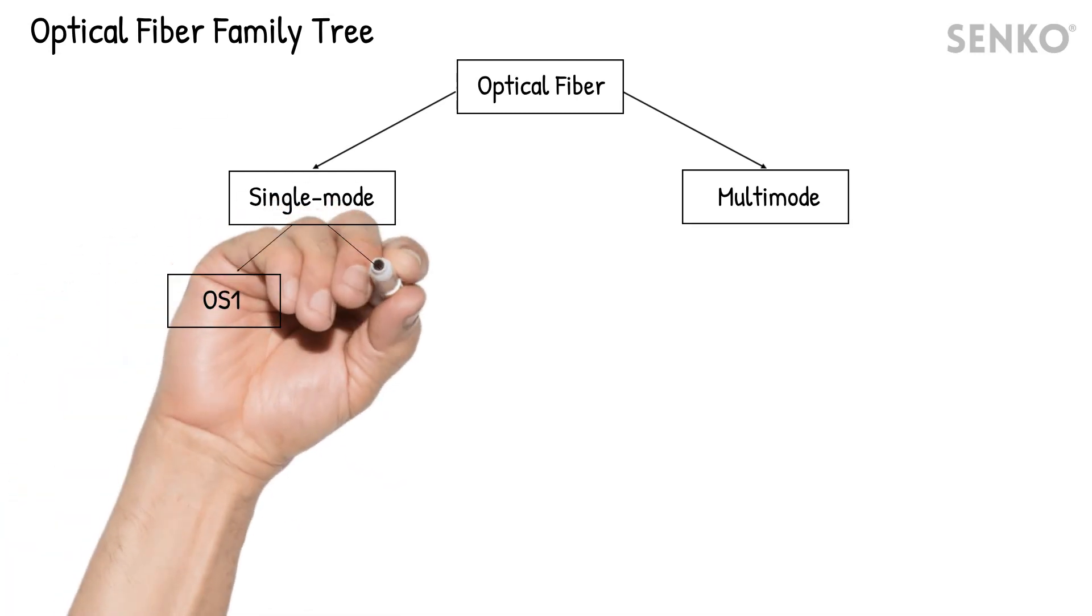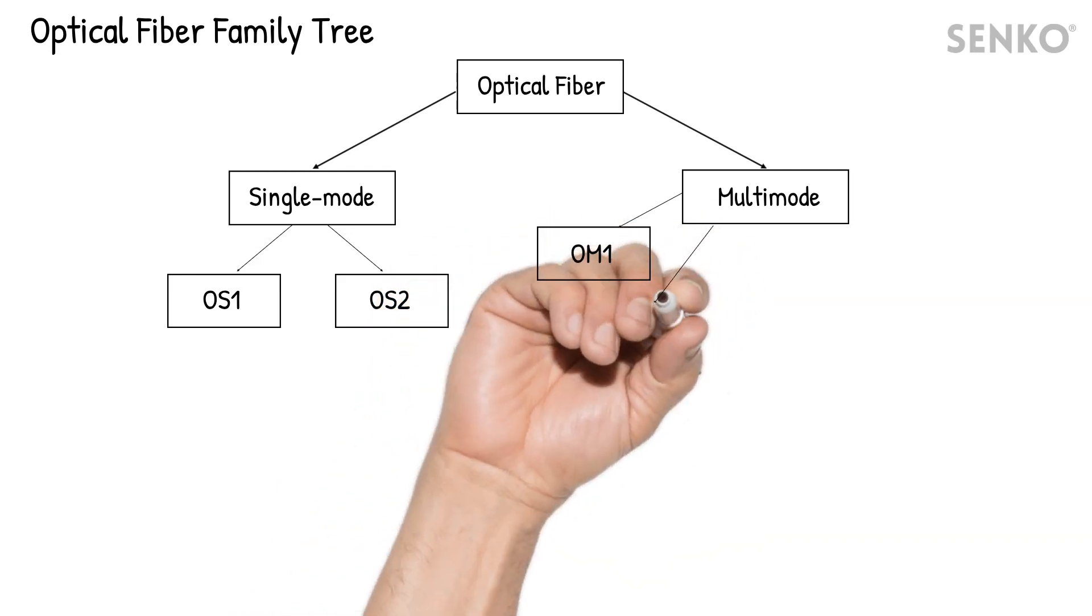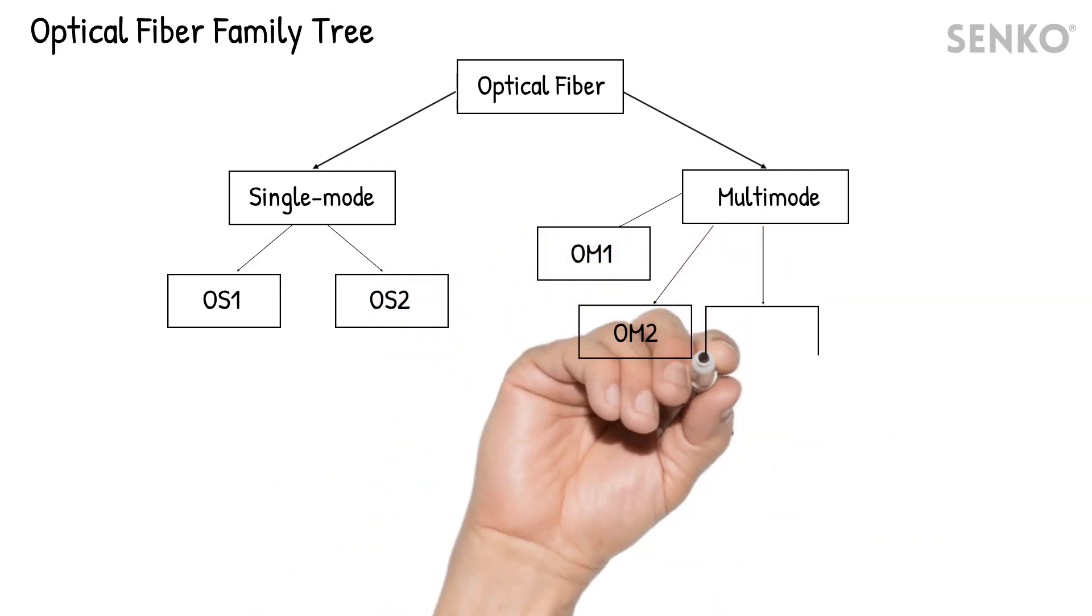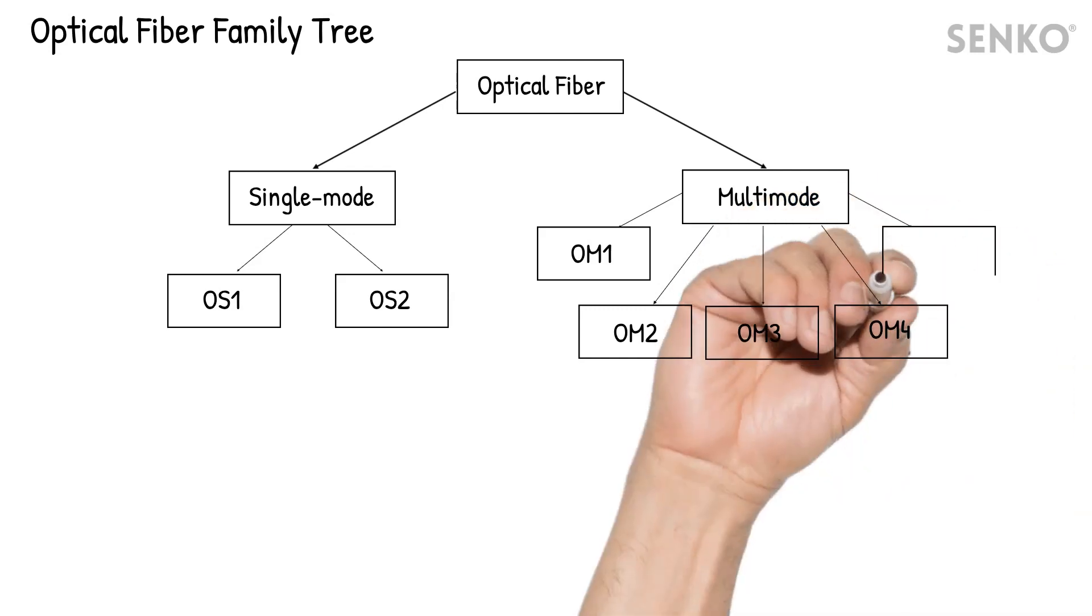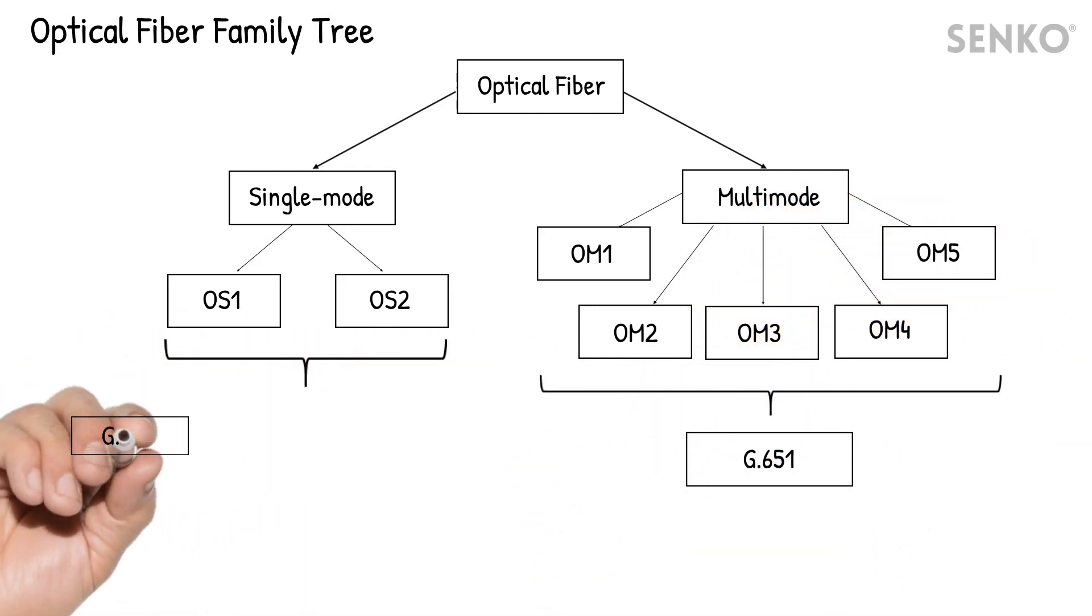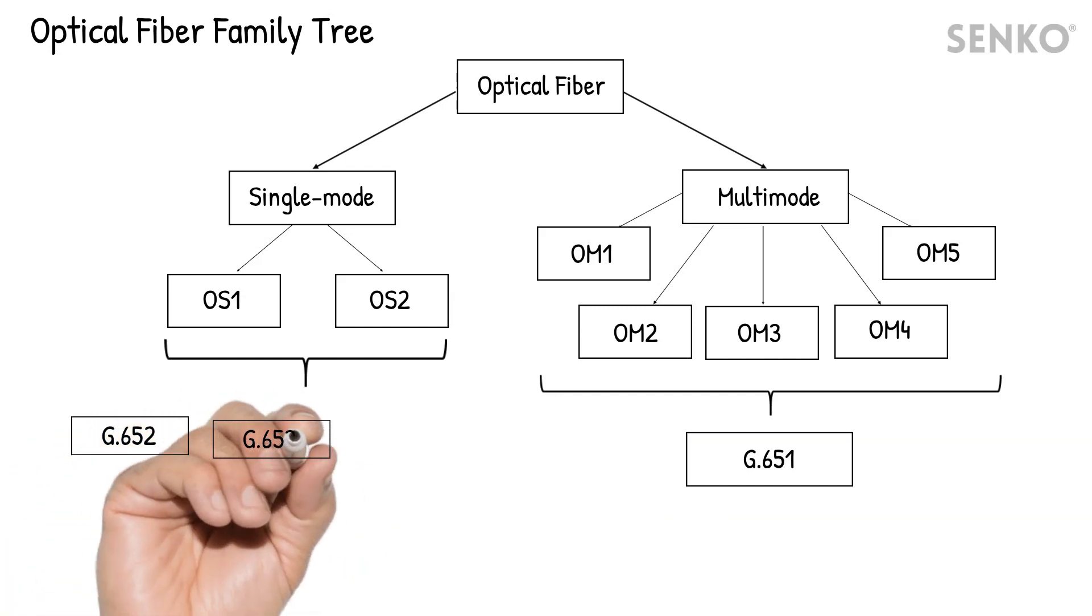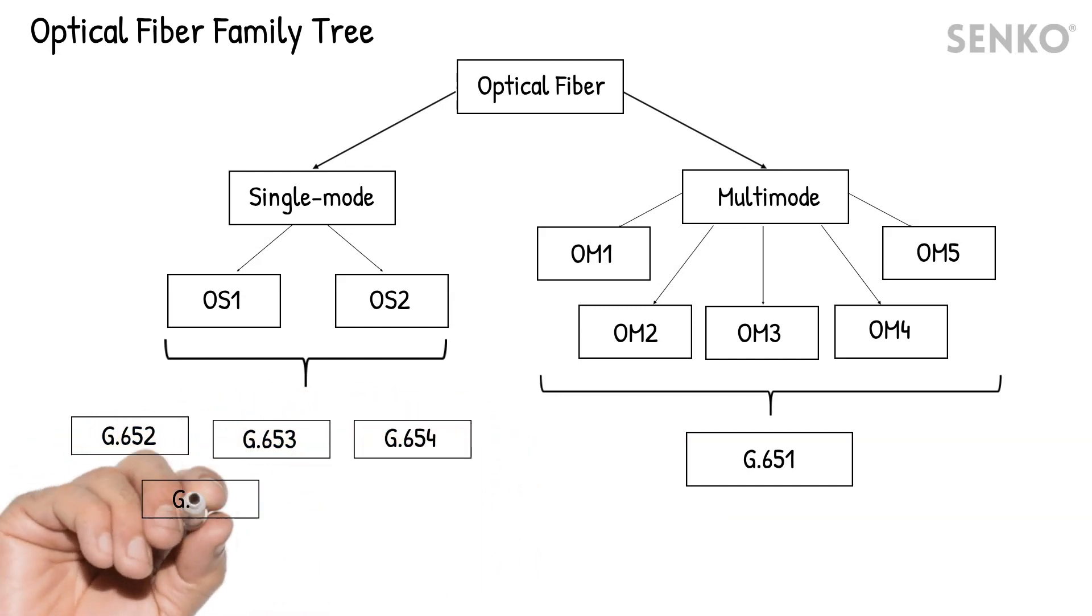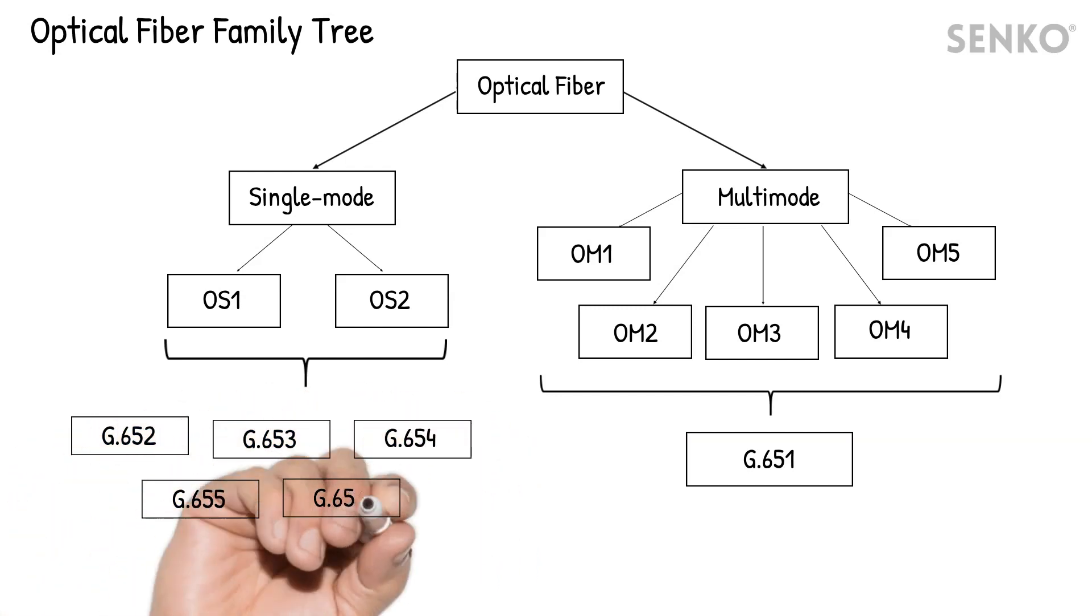Single-mode fibers can be further divided into OS1 and OS2, while multi-mode fibers can be divided into OM1 to OM5. The ITU-T standard recommends a range of optical fiber cable specifications from G.651 to G.657.